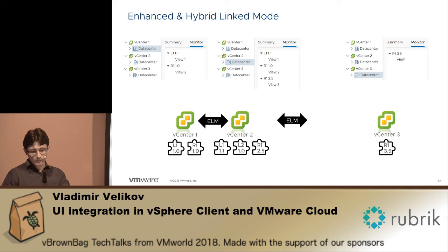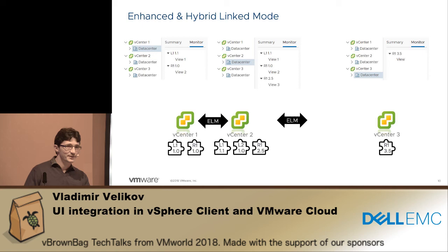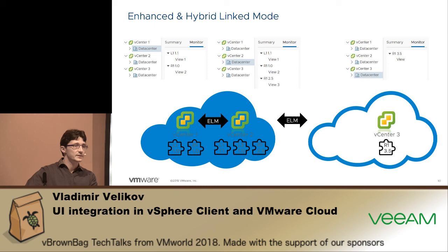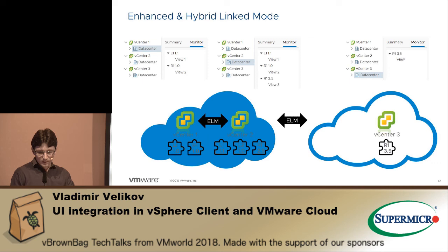In the second picture, the local plugins are also the versions attached to vCenter 2 because they are the latest ones. Now, what if we have the first two vCenters in one SSO domain and vCenter 3 in another SSO domain? In that case the second ELM connection is no longer possible, but if the left one is the private cloud and the right one is the public cloud, we can establish a hybrid link mode.